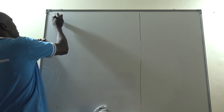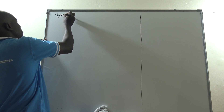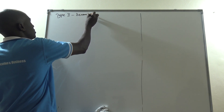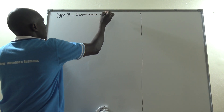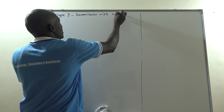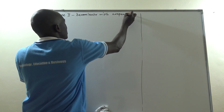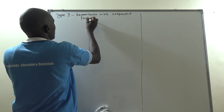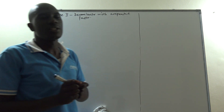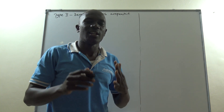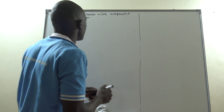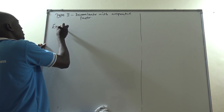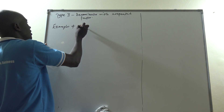So we are looking at Type 2 — a denominator with a repeated factor. We want to look at cases where the factor is repeating several times. You can see examples of repeated factors.